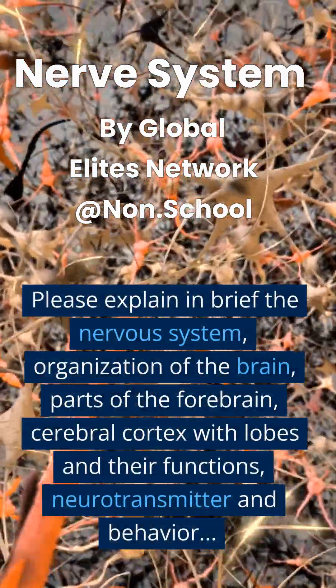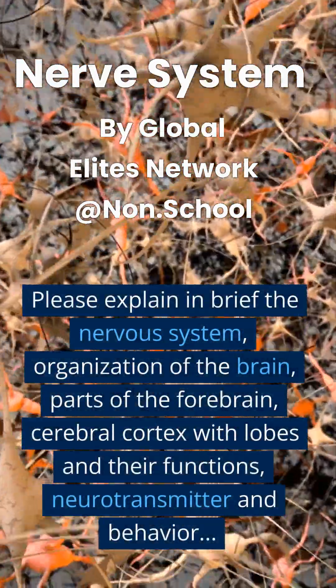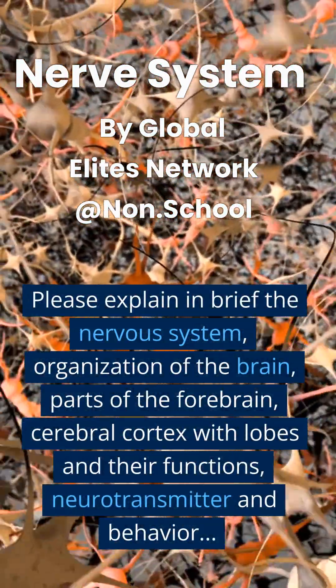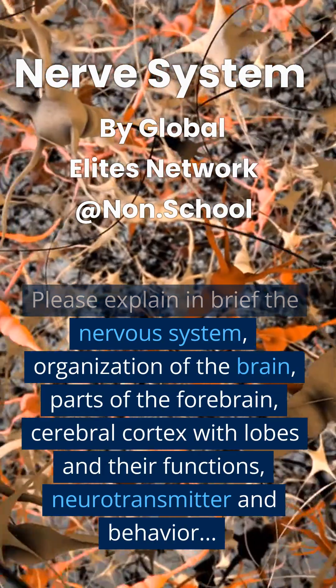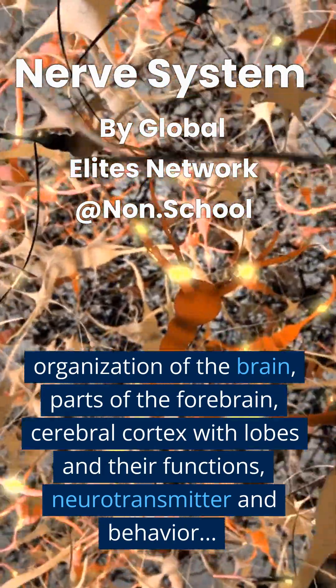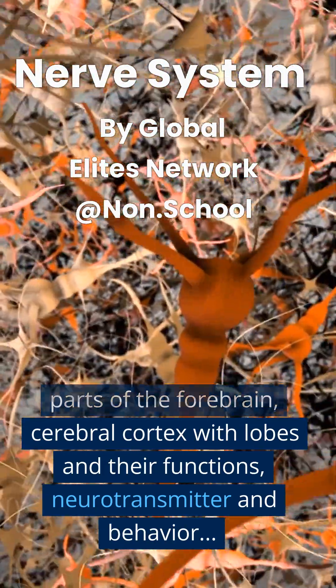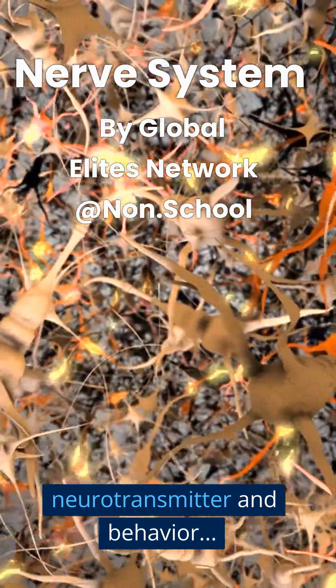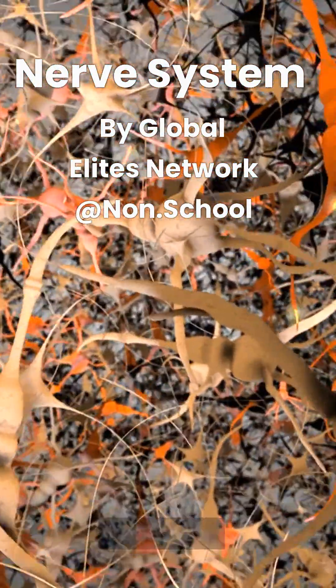Please explain in brief the nervous system, organization of the brain, parts of the forebrain, cerebral cortex with lobes and their functions, and neurotransmitter and behavior.